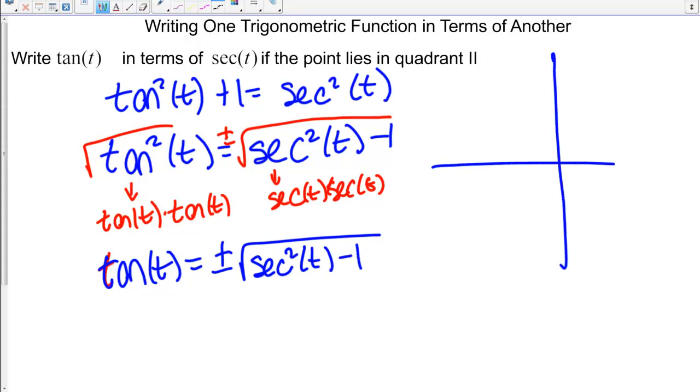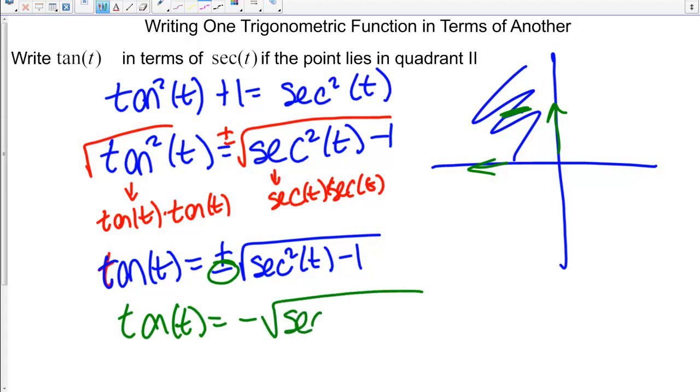If we're in the second quadrant, so up here we have tangent is negative because we have positive Y negative X. This is going to be negative, so tangent of T is negative square root of secant squared of T minus 1.